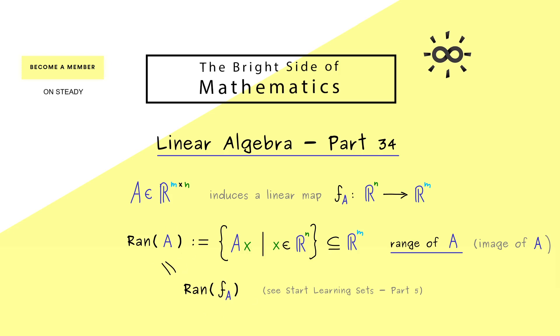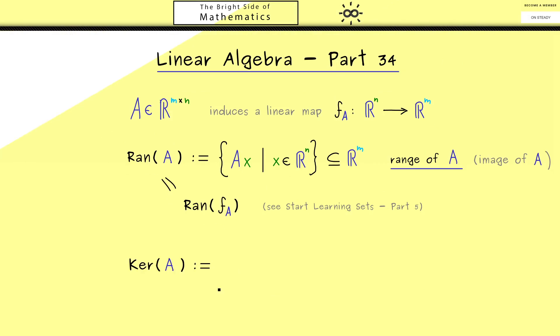Now the next notion, the kernel of a matrix is something new. A short notation for this is simply Ker(A). This also denotes a set. However, now it's a subset of R^n. So on the map level, it's something that lives on the left-hand side. The definition is very simple. It just consists of all vectors x that are sent to the zero vector on the right-hand side. In other words, Ax = 0.